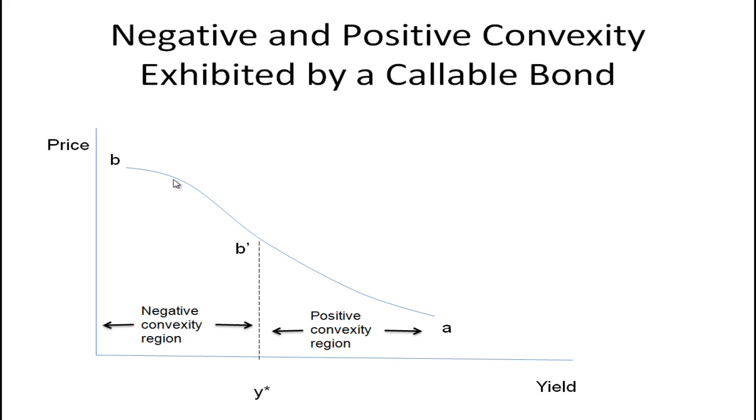So when you look at a callable bond, it has a region of positive convexity—that's the normal part of the bond. And then when you get to that certain yield where we start thinking that the bond may be called, then you get this negative convexity region where the bond's price doesn't rise very much when interest rates fall.